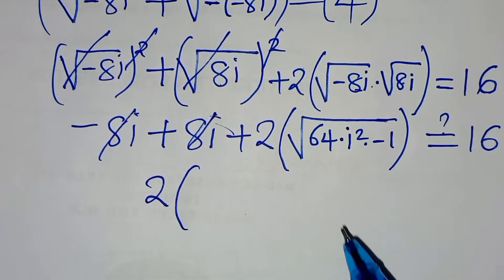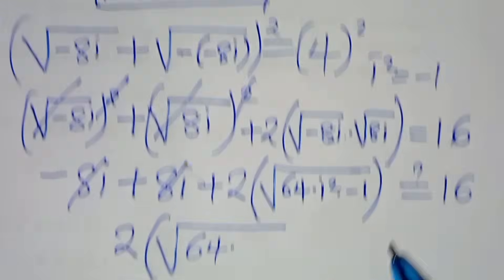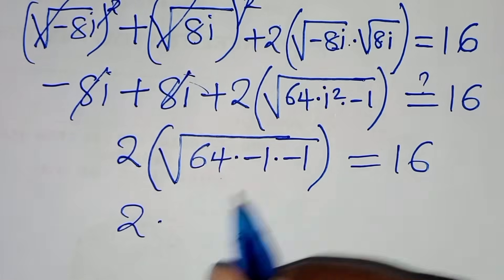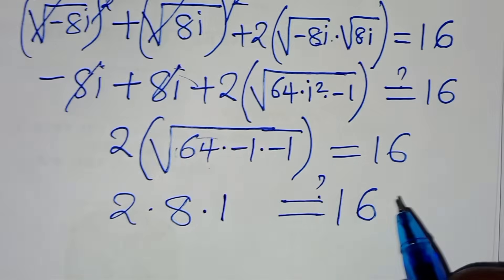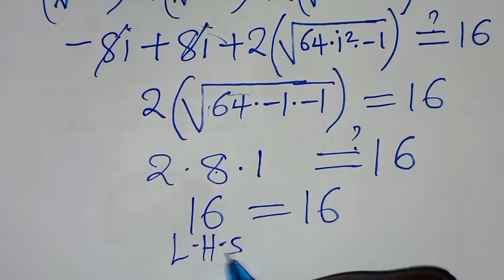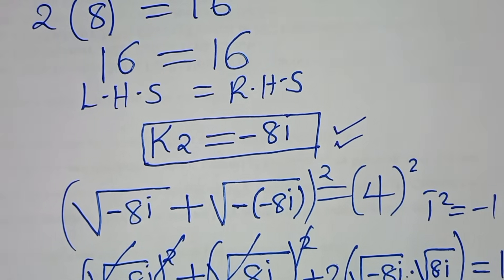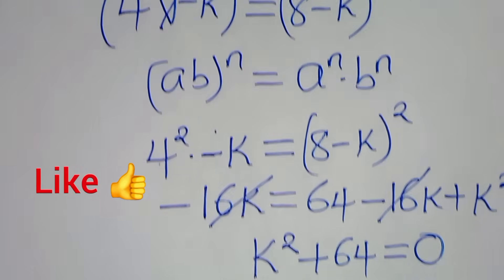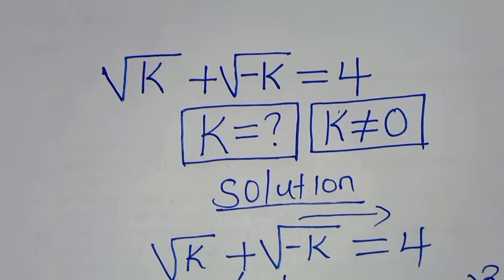So minus 8i plus 8i simplifies, and we have 2 times square root of 64, which is 8, times i squared, which is minus 1, times minus 1, equals 16. So 2 times 8 times 1 gives us 16 equals 16. So the left hand side equals the right hand side, which implies that k2 also satisfies the equation. Both k1 and k2 satisfy the equation. Please like this video and subscribe; you can also give alternative solutions in the comment section. See you in the next video, bye bye.